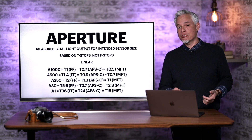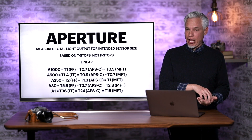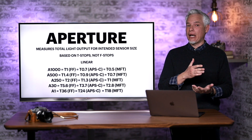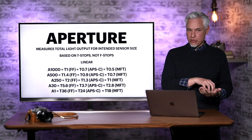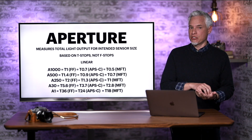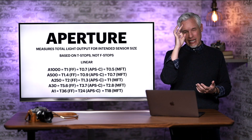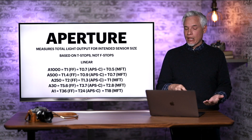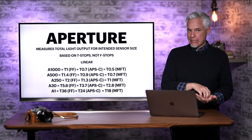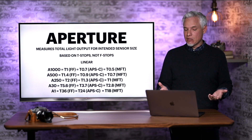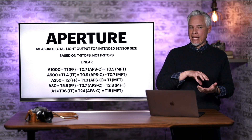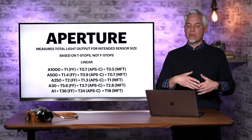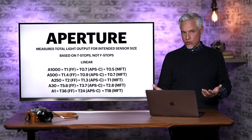I'm also making the new aperture system linear. So if you double your aperture number from say 1 to 2, you're increasing it by one stop. Smaller aperture numbers produce darker images. Thus, A1 indicates a very small aperture, while A1000 indicates a very big aperture. I did base it roughly on the existing t-stop system. So if you had a t1 lens, that will become an A1000 lens, and if you have a t5.6 lens, that will become an A30 lens.